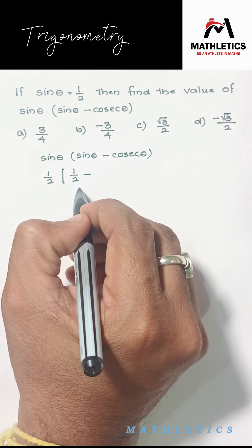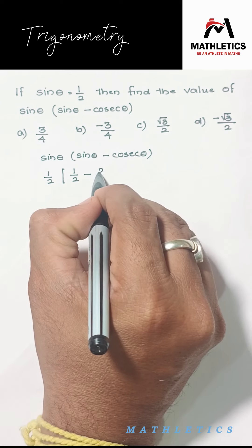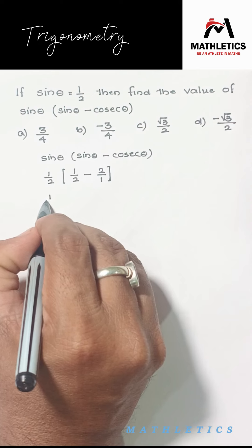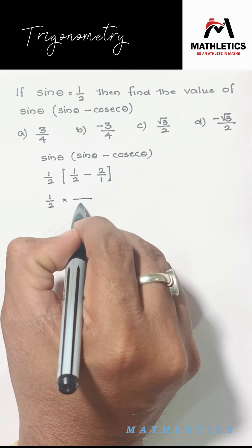Cosec θ is nothing but the reciprocal of sin θ, which can be written as 2/1. So this is 1/2 as it is. I can go for the LCM. The LCM of 2 and 1 is 2.